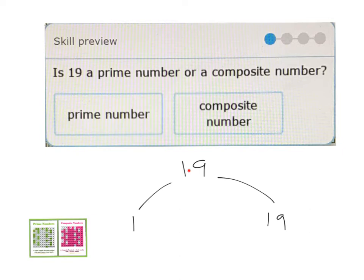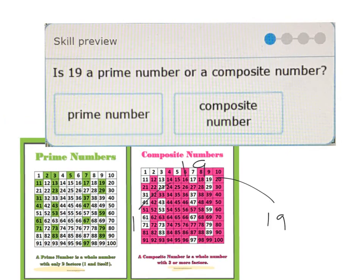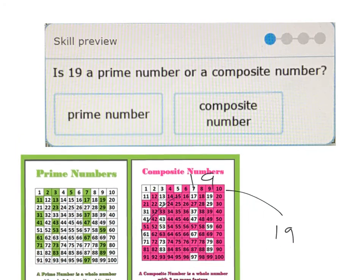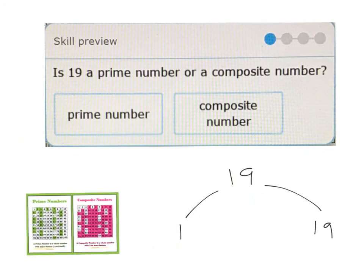So this number, 19, only has two factors, one and 19. If we check on our little sheet here, look, yeah, 19's in the prime number zone. So yes, 19 is definitely a prime number.